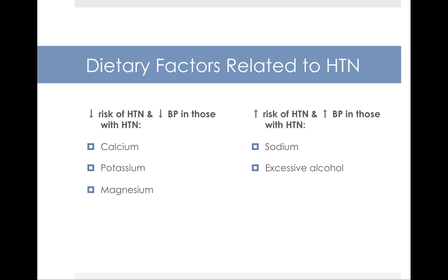Dietary factors that can decrease hypertension risk include eating more calcium, potassium, and magnesium. Potassium is especially important — we have strong data indicating that increasing potassium from foods, not supplements, can help lower blood pressure. The best way to do this is to eat more fruits and vegetables, which are naturally high in potassium and naturally low in sodium. Conversely, eating too much sodium and drinking excessive alcohol increase blood pressure risk.